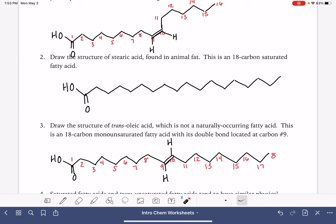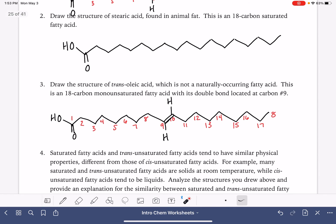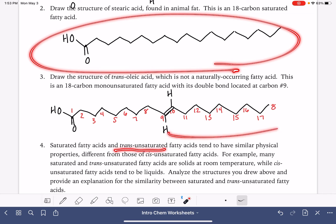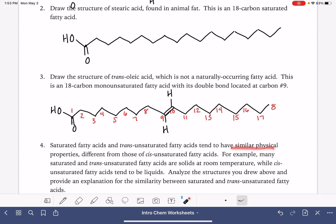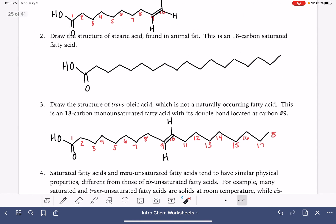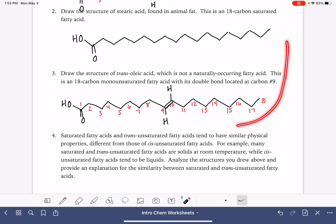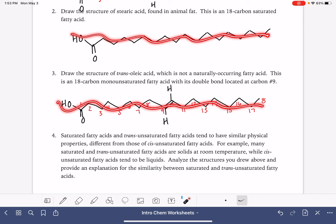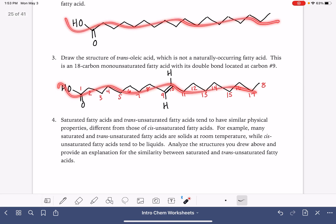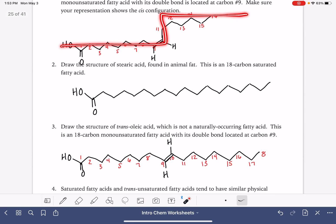The last problem says that a saturated fatty acid, which is what we have right here, and a trans unsaturated fatty acid, which we have right here, they tend to have similar physical properties, which are different from cis. The first one that we drew is the cis, an example of a cis fatty acid. For example, saturated and trans tend to be solids at room temperature. Cis tends to be a liquid. Can we provide an explanation for this based on the similarity of the structure? Well, as we're looking right now at the saturated and the trans fatty acids, we can see that they have a very linear, it's zigzagged, but it's a very linear shape to them, where the cis has a kink in the shape of the molecule.